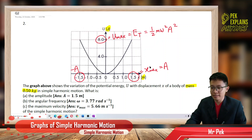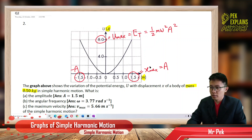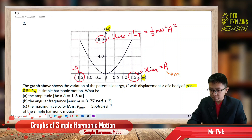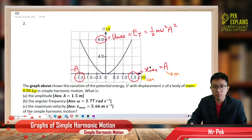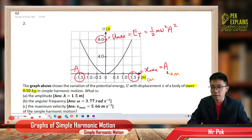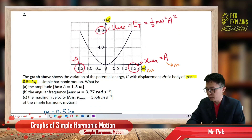Take note of the units — this is in Joules, already in SI units, so no need to convert. And displacement is in meters. This is very important — the amplitude is in meters. Sometimes it can be cm or mm, so be careful with units.